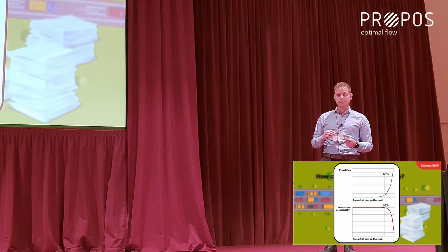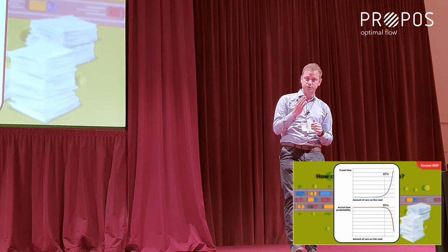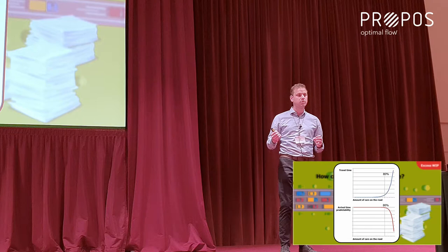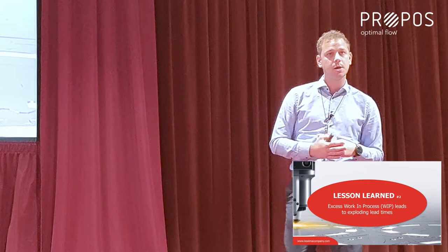In order to have a good flow, you should schedule your machines at 80%. Compared to the highway, you use less of the asphalt, but the flow goes up and the output goes up. That's our second lesson: excess work in process leads to exploding lead times. If you go over 80%, your lead times explode. In order to keep your lead times short, schedule at 80%.